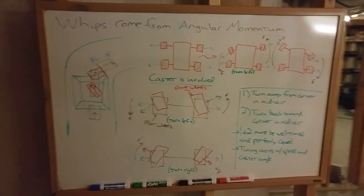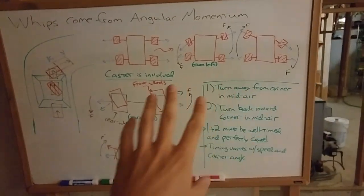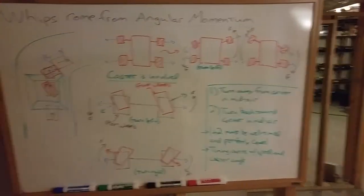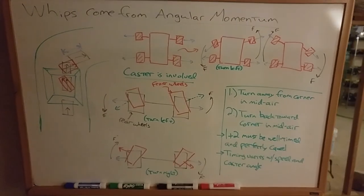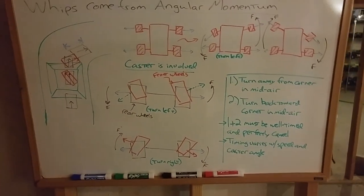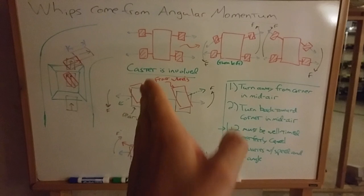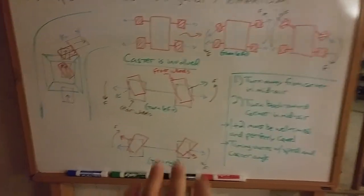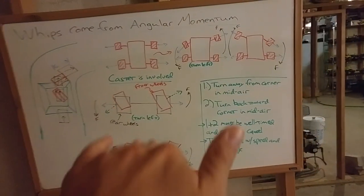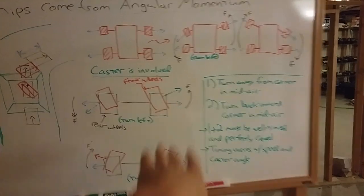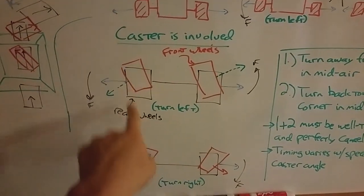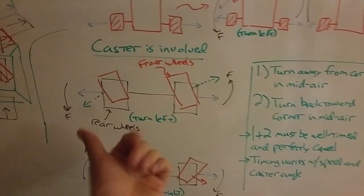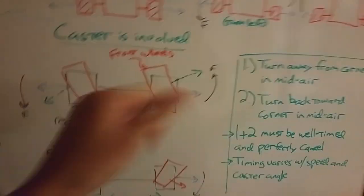But the effect of angular momentum on making the car pivot is more complex than this, because you also have caster angle associated with the steering geometry. Now, with a caster angle, you can go and watch the tutorial video I have on caster, but basically what happens with caster is as the front wheels turn, they also end up changing in their camber angle.